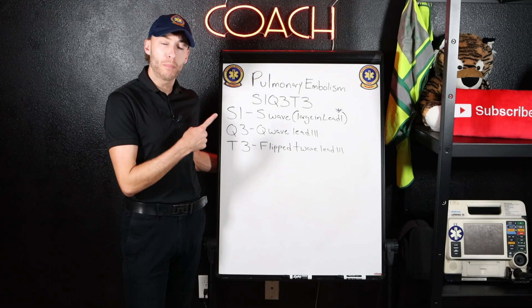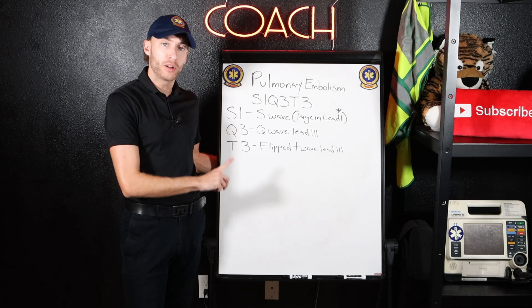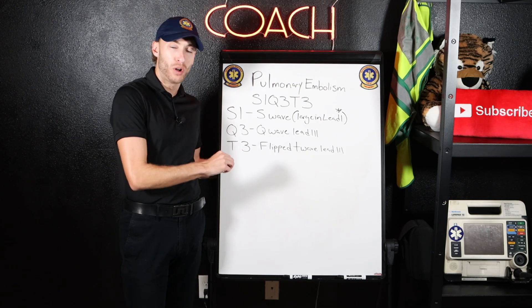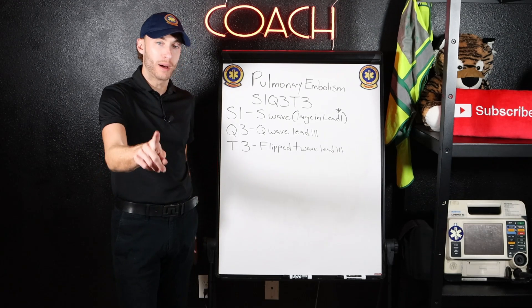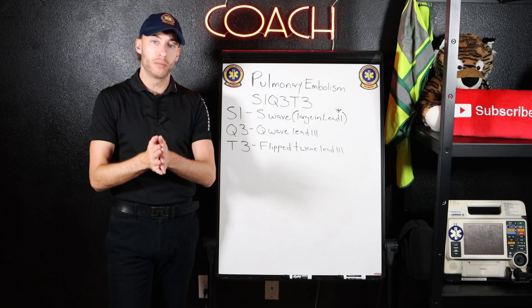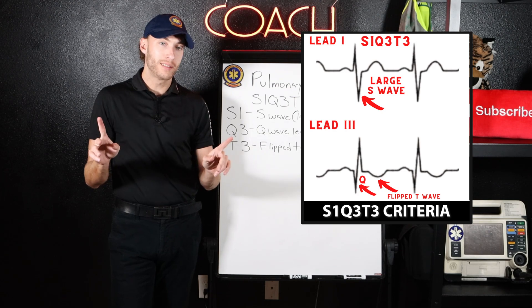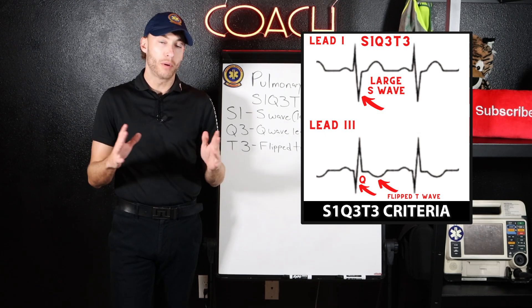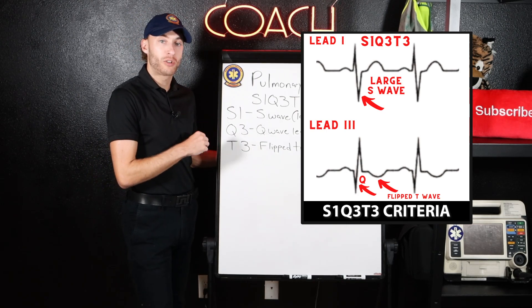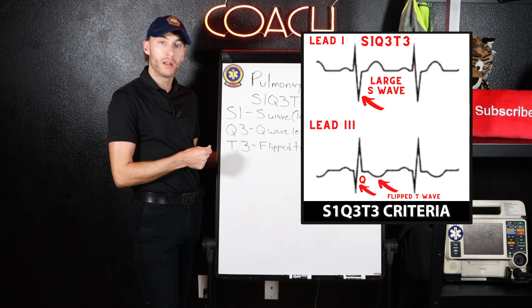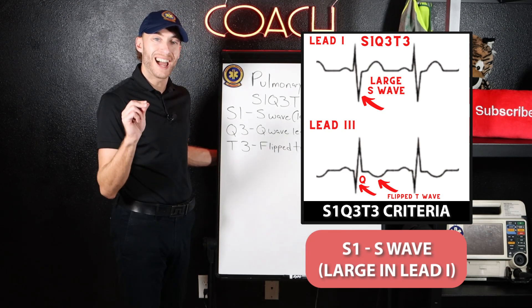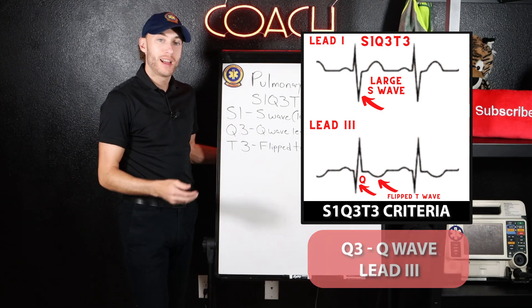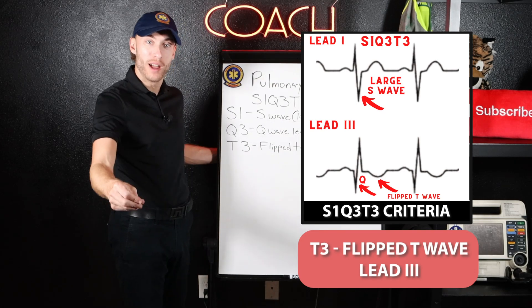Our third reason is actually pulmonary embolism. We're going to talk about acute cor pulmonale and the S1Q3T3 finding. If someone has a pulmonary embolism, you can actually see it on a 12-lead EKG — not always, but sometimes. The criteria is called S1Q3T3: S1 means a large S wave in lead one, Q3 means a present Q wave in lead three, and T3 means a flipped T-wave in lead three.